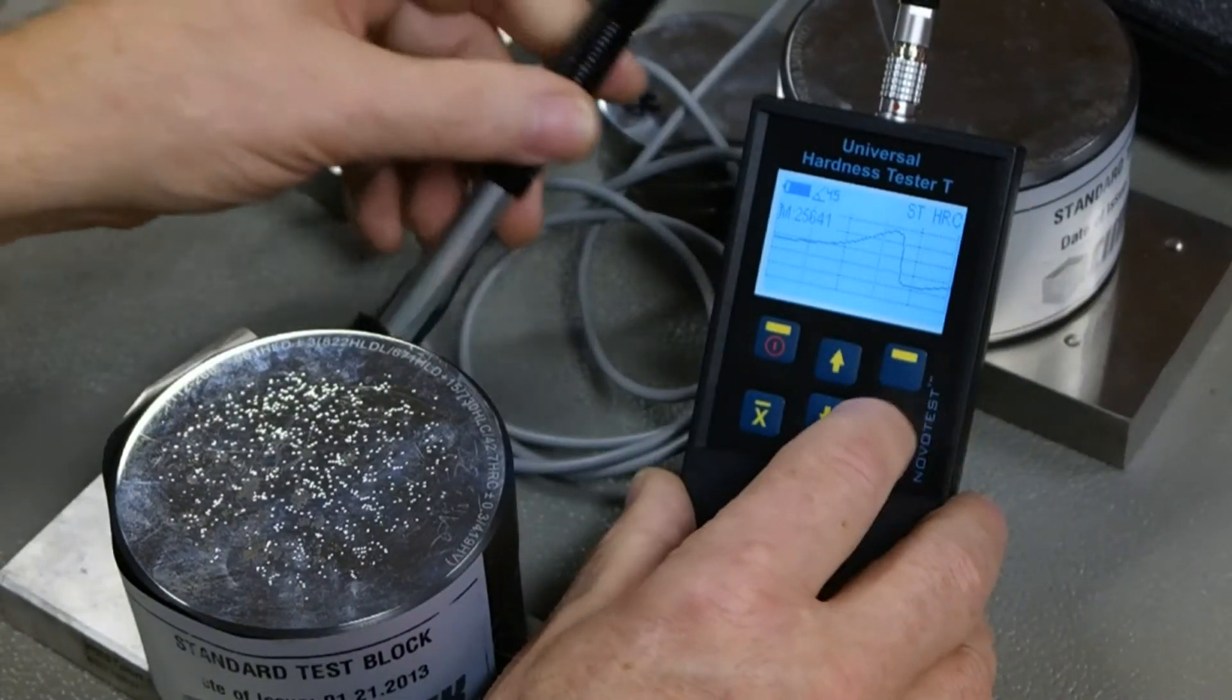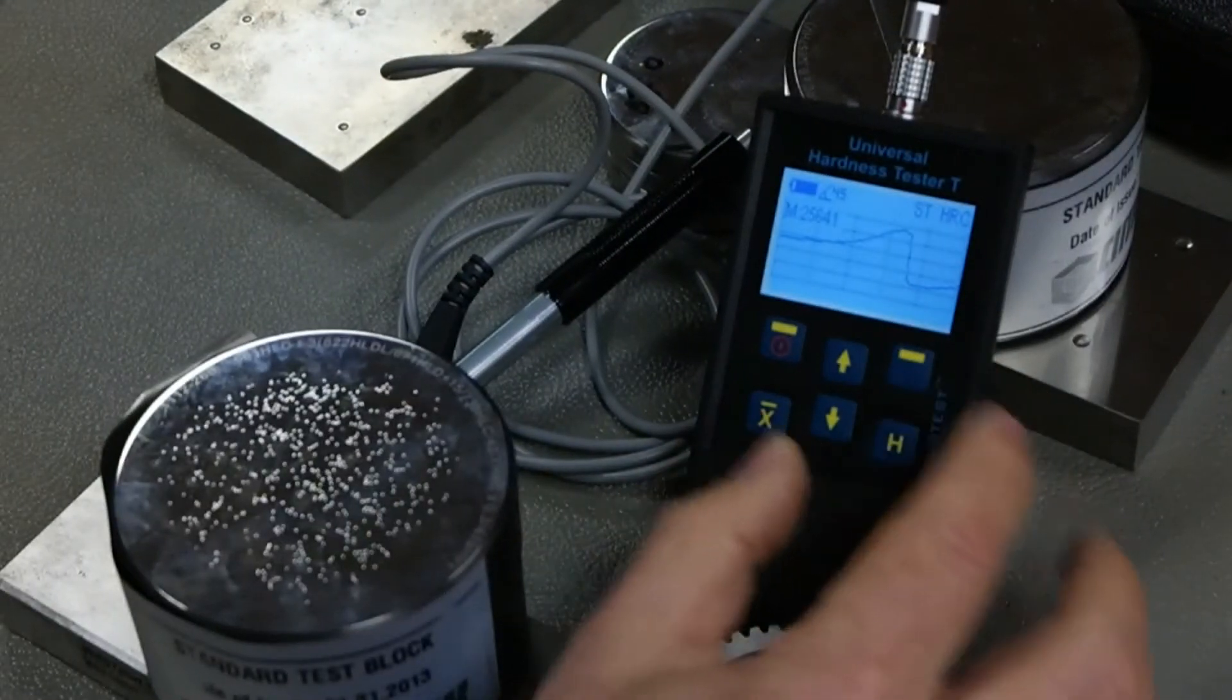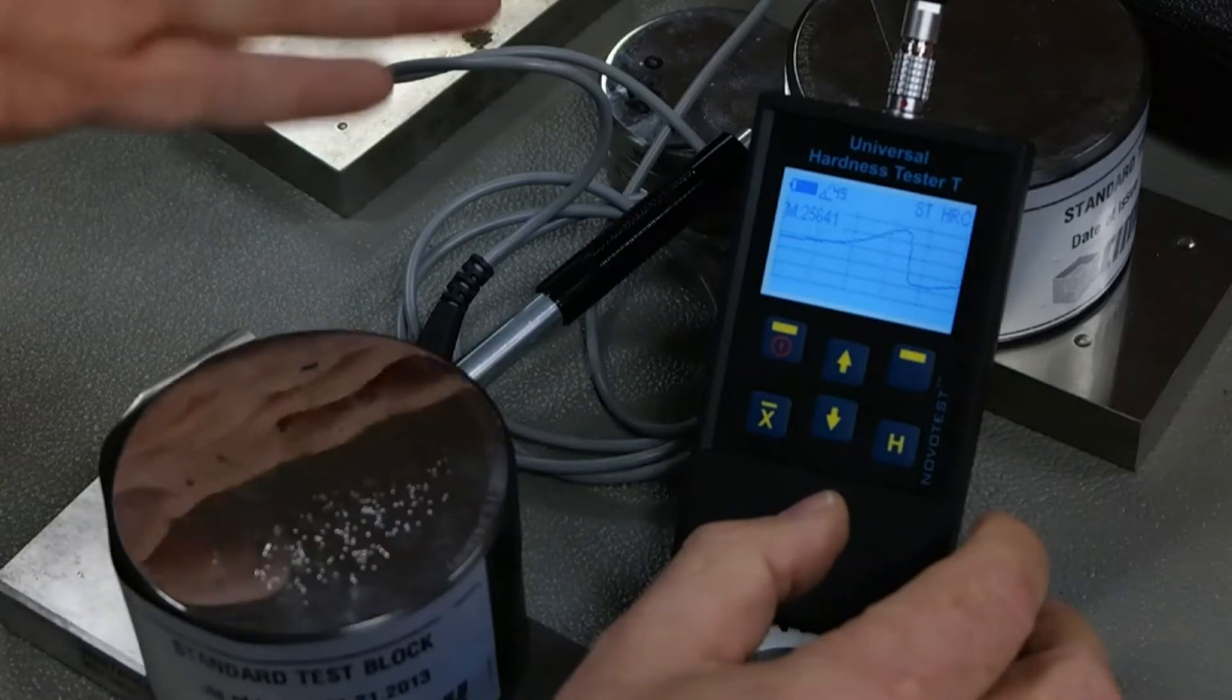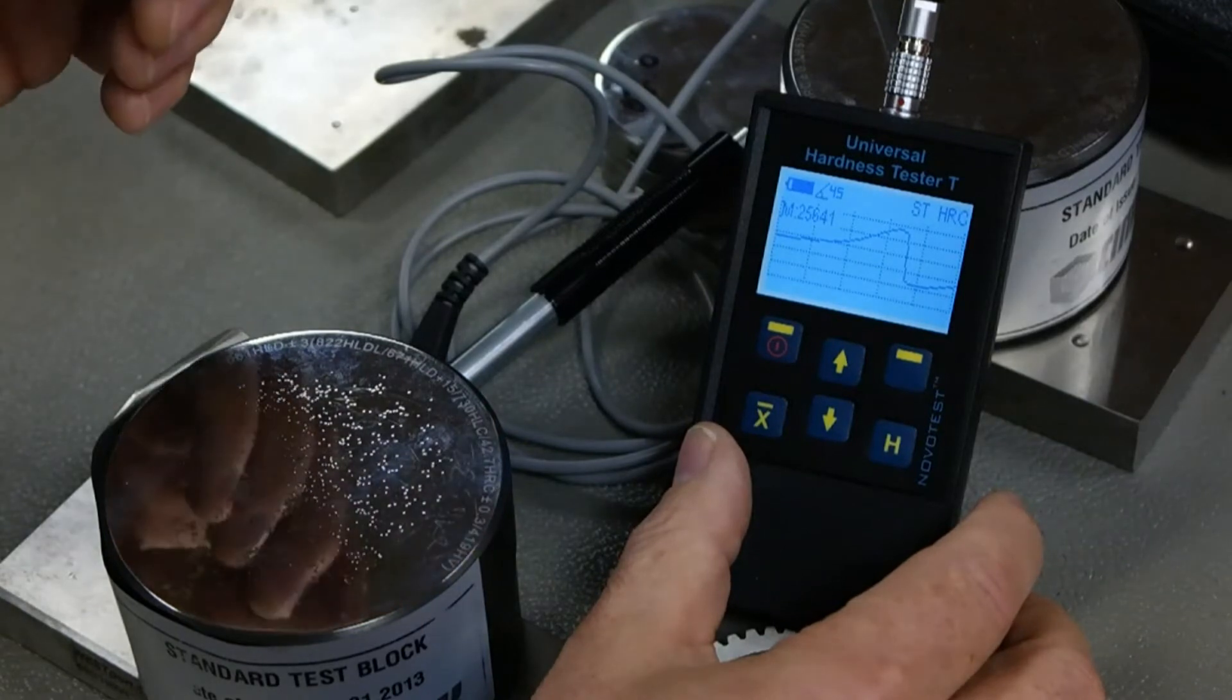So there we go. A few features of the TCM U2. Super accurate device, very fast and easy to use. Interchangeable with D-type probe, the 50N probe UCI, the 10N probe UCI.